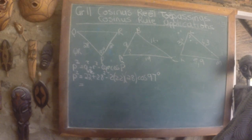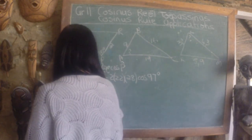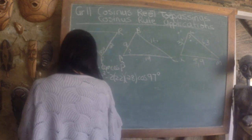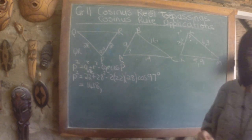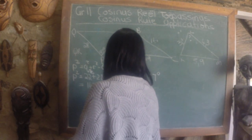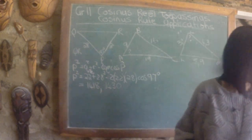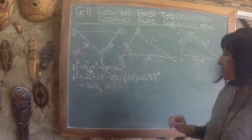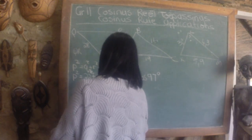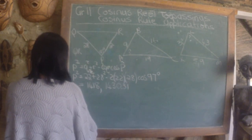The value of p squared will be 1418. And remember, you can't round over here because that's not p yet. It's p squared. So you write the whole answer that you get on your calculator, 1,430.1 and then you get the square root.